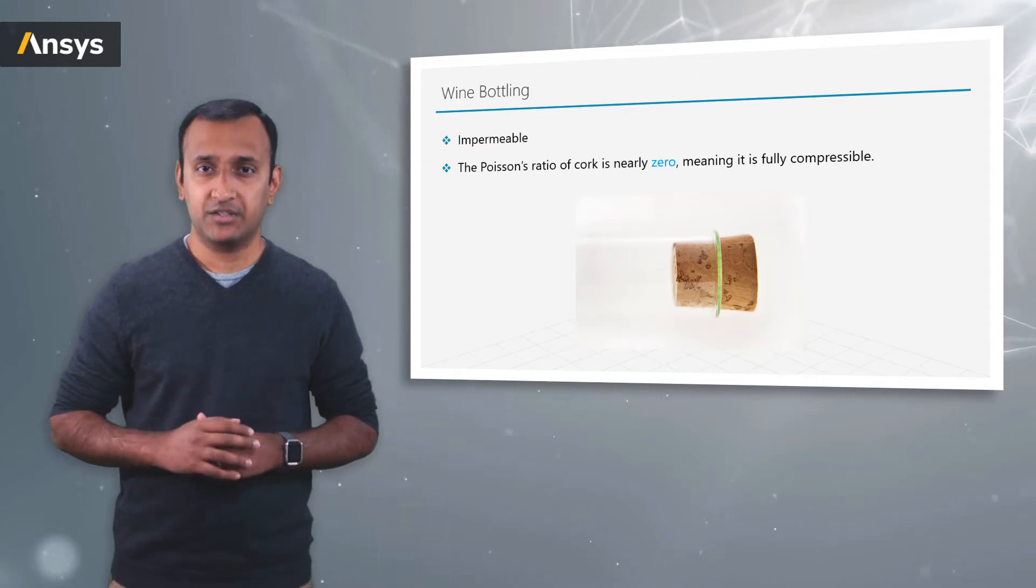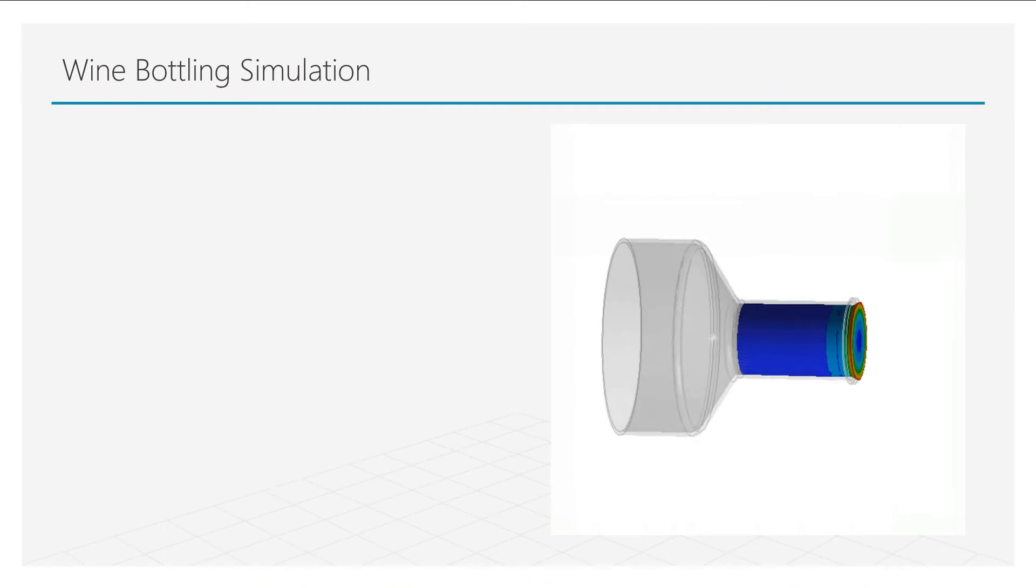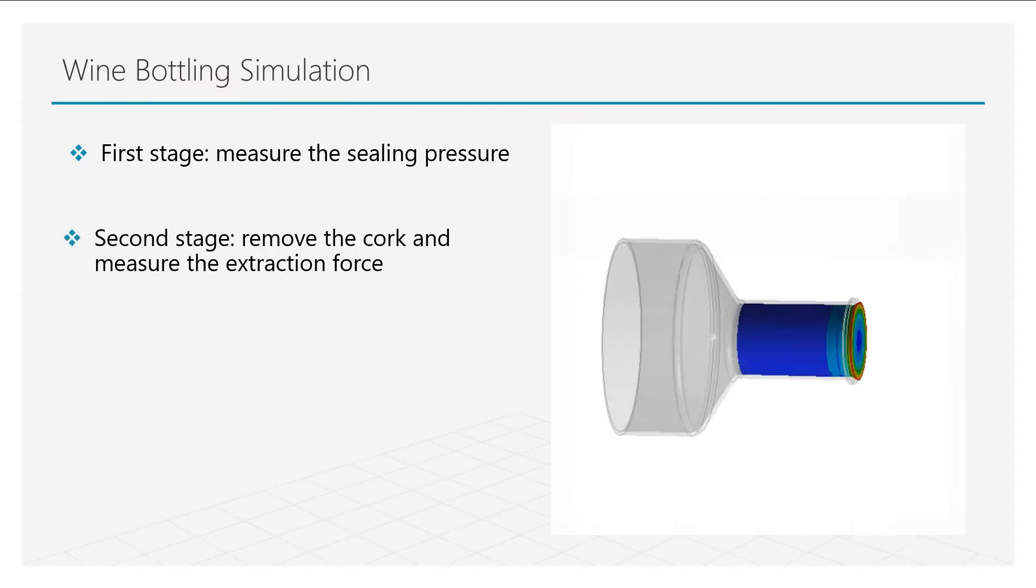Let's use simulations to answer this question. In this example, we'll model two stages of wine bottling. In the first stage, we simulate the bottling process and measure the sealing pressure at the end of the step. In the next stage, we'll try to remove the cork and measure the extraction force.